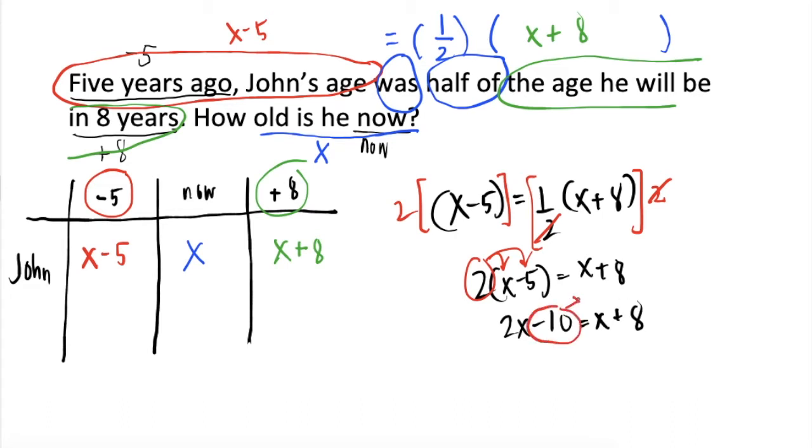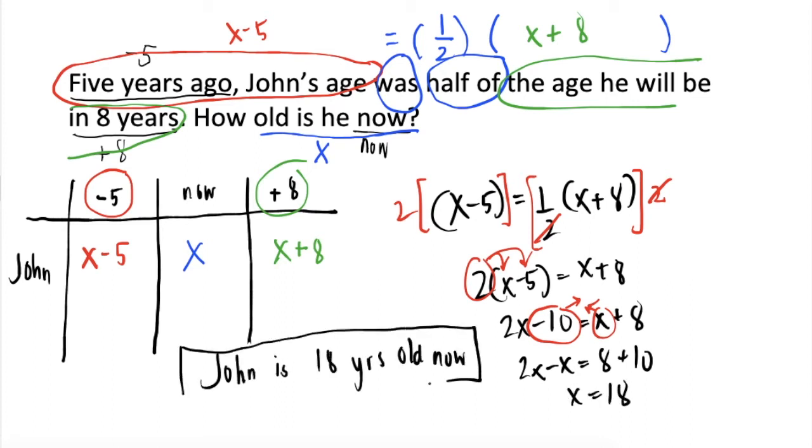So, ilipat ang negative ten and x, ang makukuha natin ay two x minus x is equal to eight plus ten. If we simplify this, we will get x is equal to eighteen. So, ang final answer natin ay John is eighteen years old.